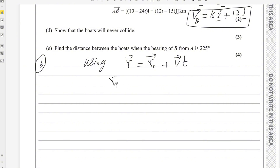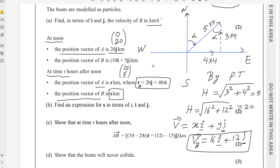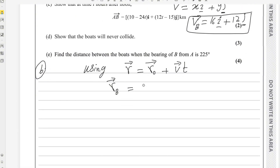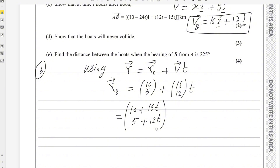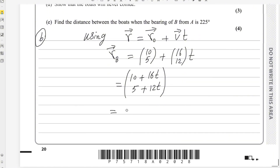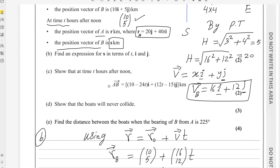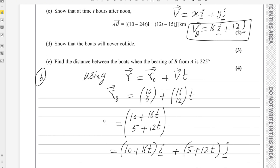We want to find the position vector of B. Using the formula, R₀ for B is the column vector (10, 5) and the velocity of B is (16, 12), so we add t times (16, 12). Combining, we get (10 + 16t) for the i-component and (5 + 12t) for the j-component. Therefore, S = (10 + 16t)i + (5 + 12t)j. The second part is done.